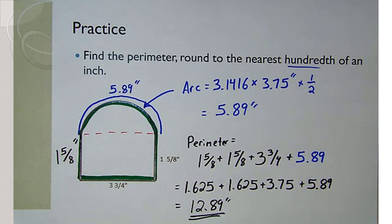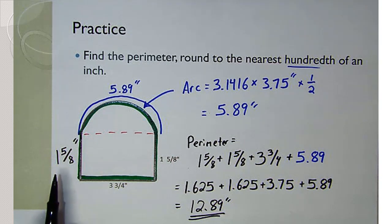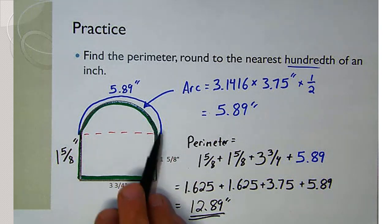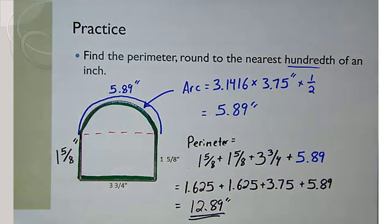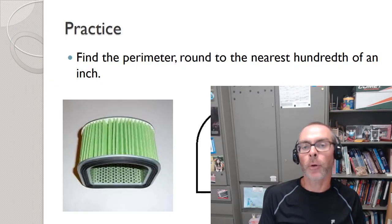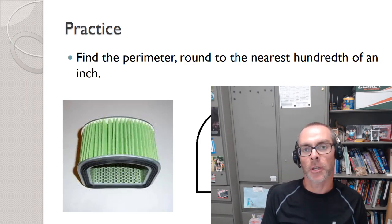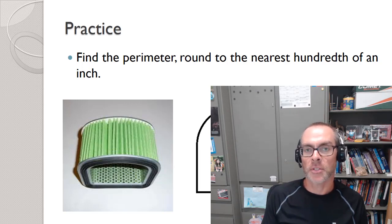If you didn't get 12.89, one common mistake is forgetting to add the left side. Another common error is multiplying pi times three and three-quarters but forgetting to multiply by one-half since we only have half a circle on top. If you didn't get that, rewind and watch that process again so it makes sense. You'll have a variety of problems like this in your practice problems for today. That wraps up our first topic in our geometry section — go ahead and do those practice problems, and as always, feel free to text or email me if any of those practice problems give you trouble. Some of them are a little bit tricky, so don't hesitate to reach out. We'll see you in our next lesson.